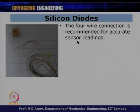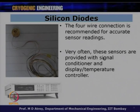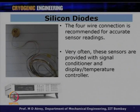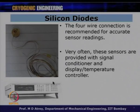A four-wire connection is recommended for accurate sensor reading. These sensors are often provided with a signal conditioner and temperature controller display. One can select the kind of sensor on the display, and calibration curves are normally loaded in, so the calibration curve for a particular diode can be directly fed to the temperature controller and displayed.